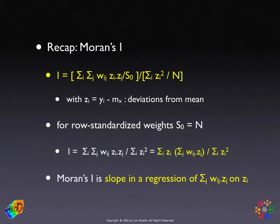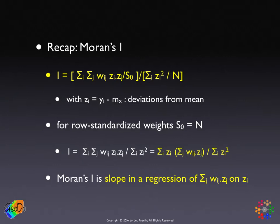Formally, it's a very simple result. If we look closely at Moran's I, it's a ratio of cross-products in the numerator scaled by the number of non-zero elements in the weights matrix, and a variance estimate in the denominator.